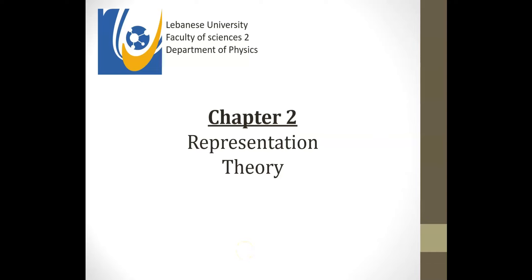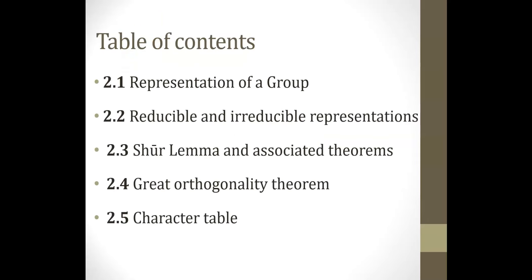In this chapter we will introduce representation theory, which is a very important part of group theory. The table of contents consists of: first, the definition of representation of a group; then the concept of reducible and irreducible representation; then Schur's lemma and associated theorems; finally, the great orthogonality theorem and the character table — the most essential part of group theory. All the mathematics introduced here lead us to the construction of the character table.